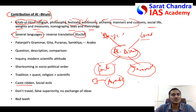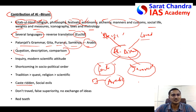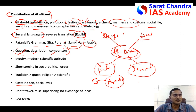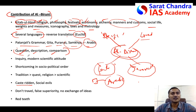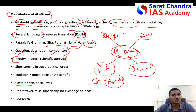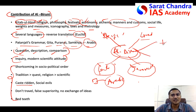For example, several Indian Brahmins wanted to learn Euclid's geometry and mathematics, which was in the Greek language, and Al-Baruni translated it into Sanskrit for Indians. He also translated Patanjali's grammar, the Gita, Puranas, and Sankhya philosophy into Arabic. His unique way of writing — starting with a question, describing it, then comparing Indian culture with his own country's culture — reflects a scientific inquiry style. Being a mathematician, his writing is highly technical and scientific, which inspired many later writers.